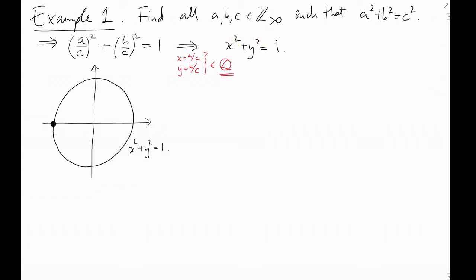So, let's fix one point on the circle that we know, say the point minus 1, 0, and consider lines through that point. The line of gradient m through that point has equation y equals m times x plus 1, and it intersects the circle in a second point somewhere. Notice that, as m varies, the second point of intersection with the circle varies.